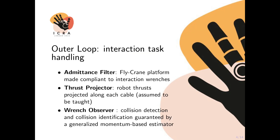The outer loop methodology's selection and implementation is the core contribution of our work. The outer loop is responsible for interaction task management. In particular, the admittance filter makes the fly crane platform compliant with interaction wrenches. The thrust projector aids in projecting the exchanged forces between the platform and the robots through the cables, and finally the generalized momentum-based wrench observer guarantees collision detection and identification.